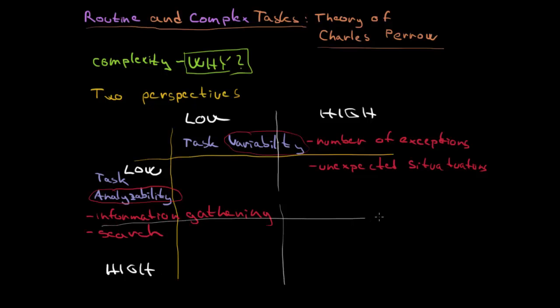So in the next video, we will try to figure out what is going to be in this table. This was the introduction to the theory of Charles Perrow. He asked himself why we consider some tasks as routine and some as complex. And then he sees two points: the variability and the perspective of analyzability.